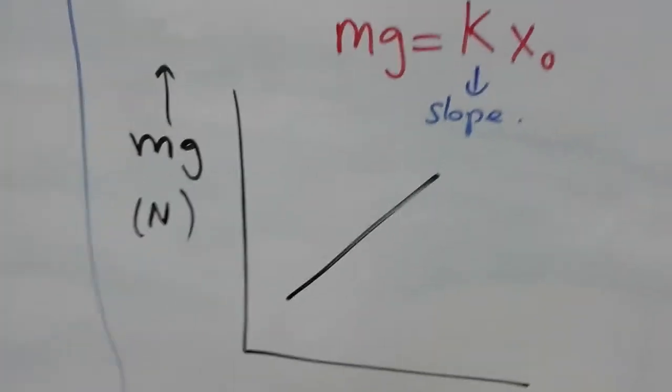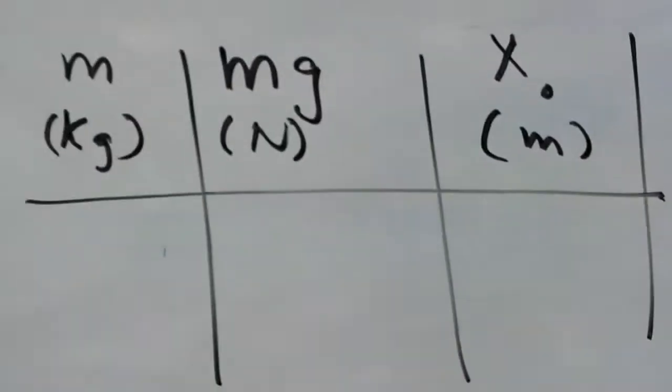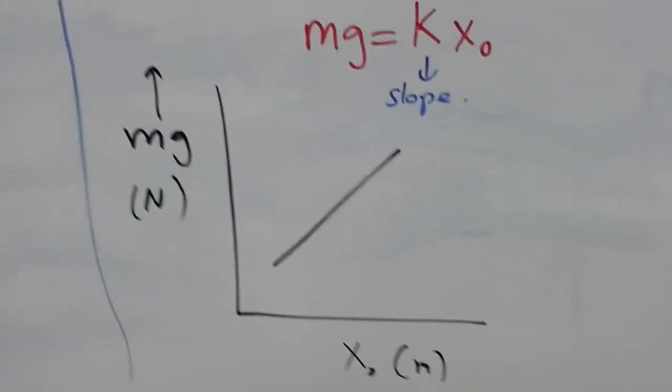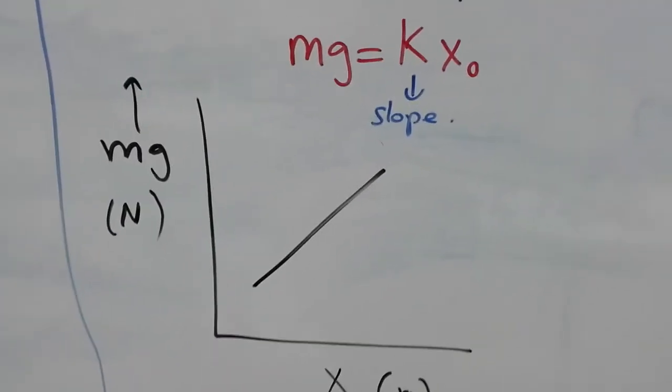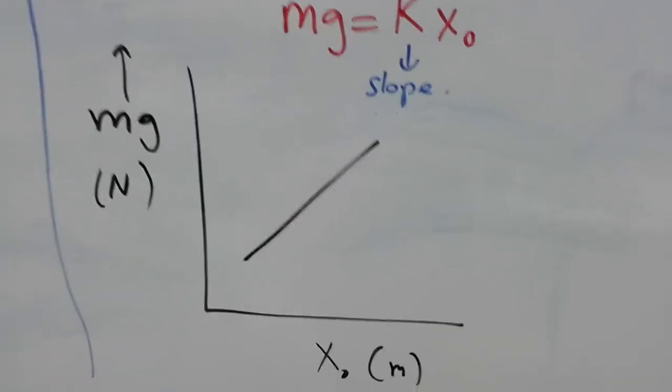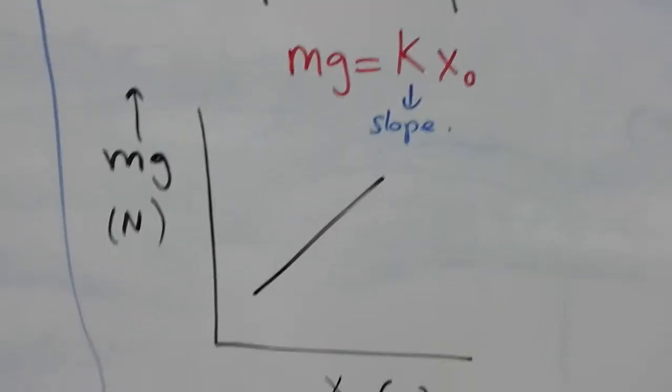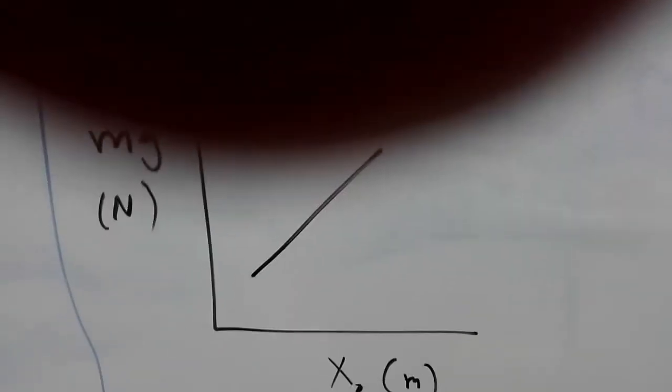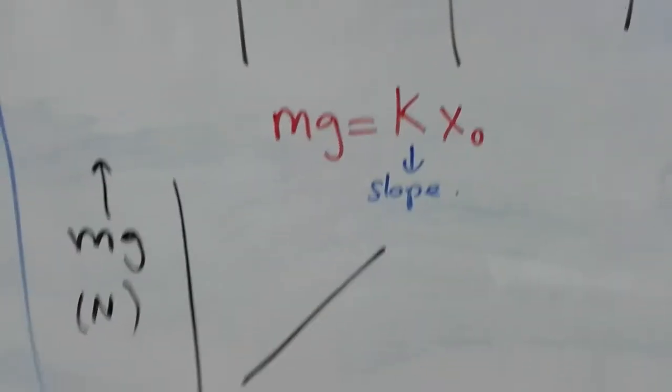You have to make a plot of this on the y-axis, this on the x-axis. When you do that, you will get, of course, a linear relationship. When you plot this in Excel and you draw the fitting line, the slope will be in this case equal to K, because of the linear relationship.